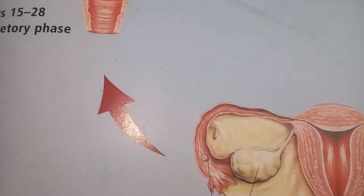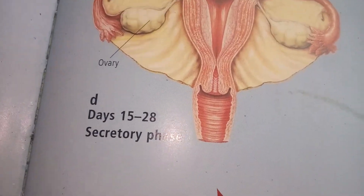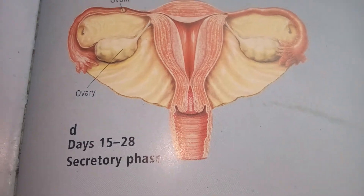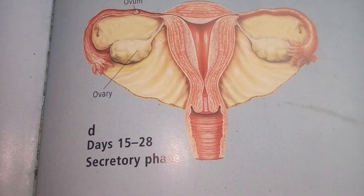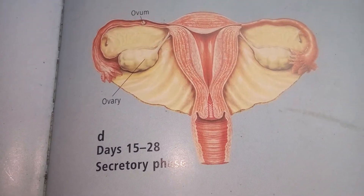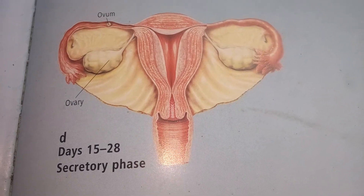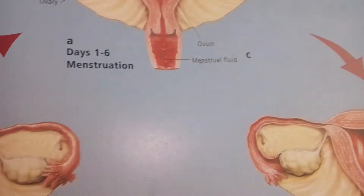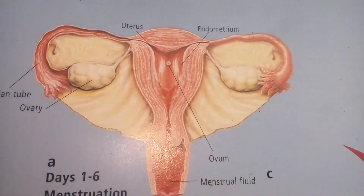Then from that point is the secretory phase, where the ovum continues to travel to the uterus. And therefore, when it is not fertilized, it gets back to menstruation.